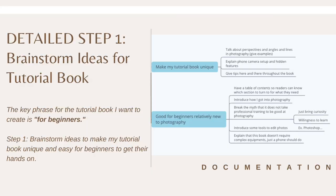Now let's look at step one in detail. The key phrase for the tutorial book I want to create is 'for beginners.' Step one is to brainstorm ideas to make my tutorial book unique and easy for beginners to get started on. On the right are documentation of my brainstorming. I brainstormed on two aspects: one, how to make my tutorial book unique, and two, how to make my tutorial book good for beginners.